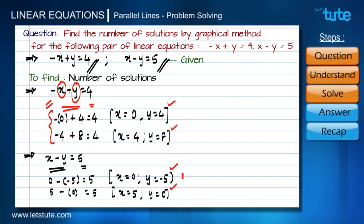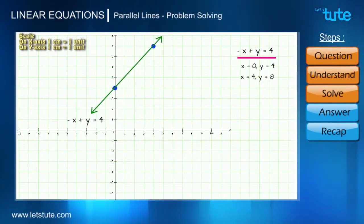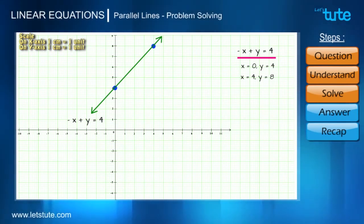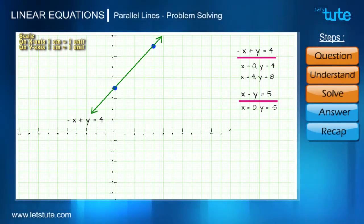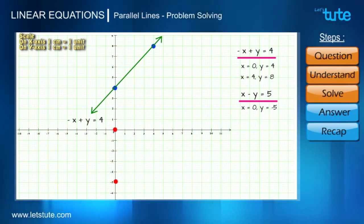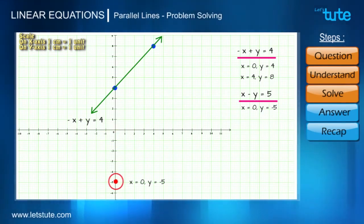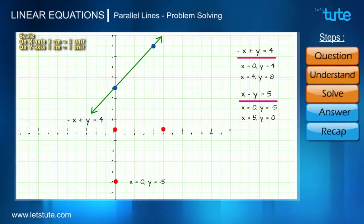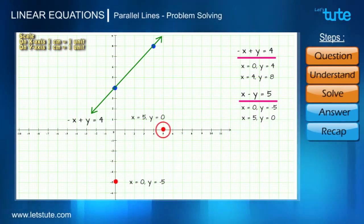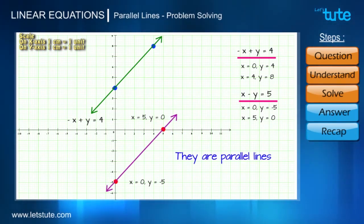Let's plot these points on the graph and join them to get the line for x - y = 5. There is already a line for -x + y = 4 on the graph. Now for x - y = 5: first set x = 0, y = -5 — since x is 0, the point lies on the y-axis on the negative side, so the point is here. Second set x = 5, y = 0 — since y is 0, the point lies on the x-axis at the positive side. Let's join them to get a straight line.